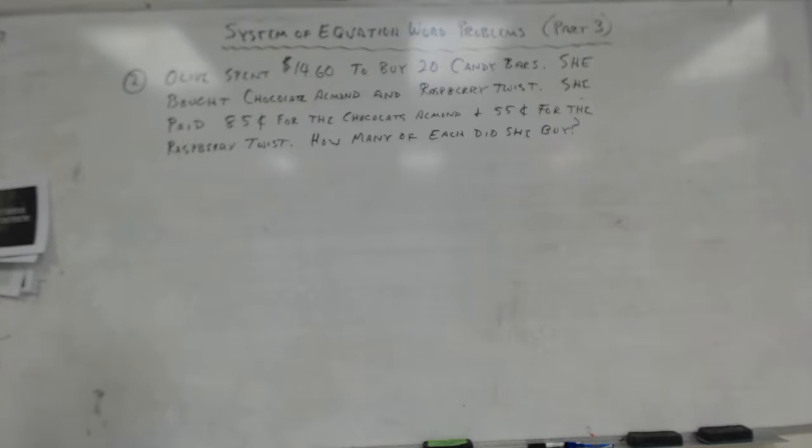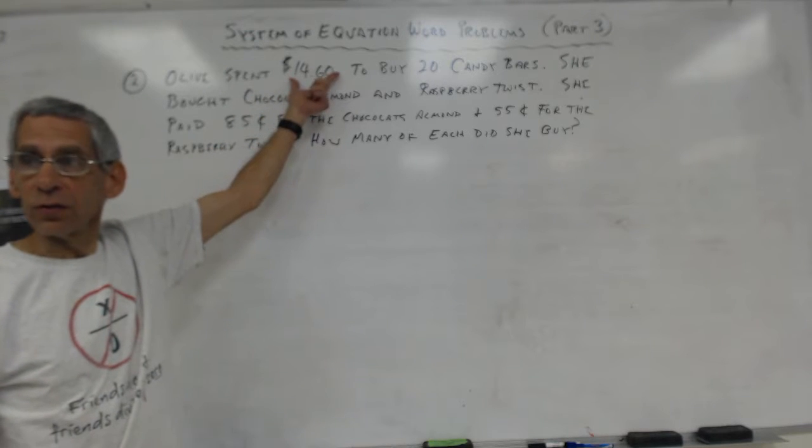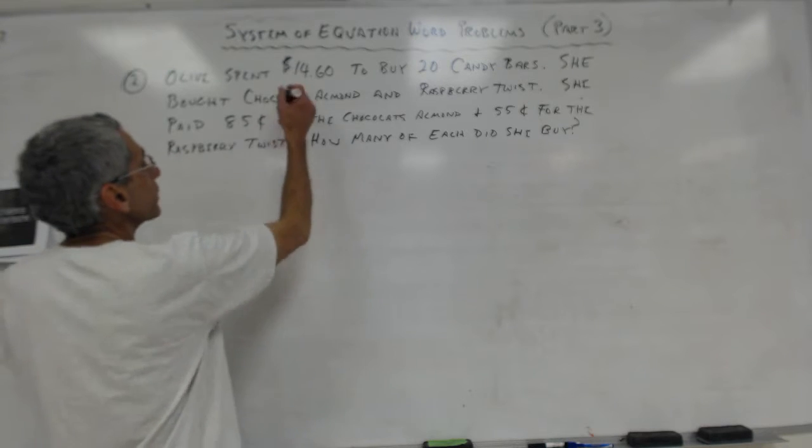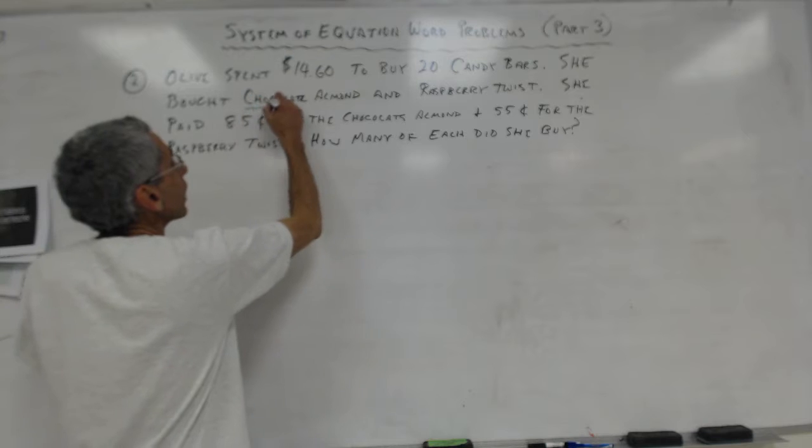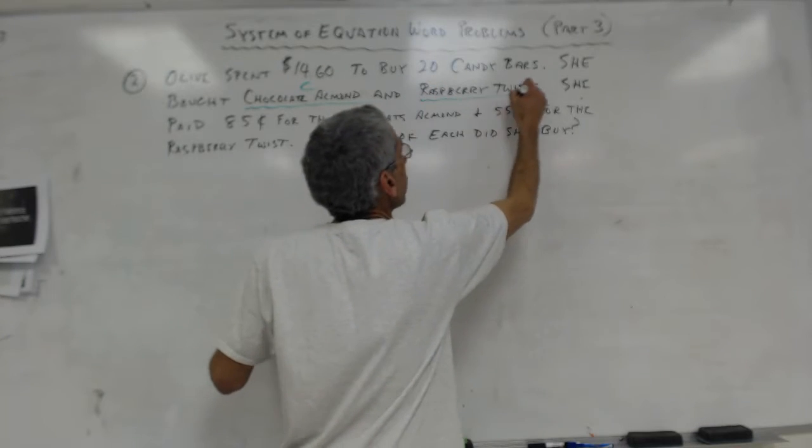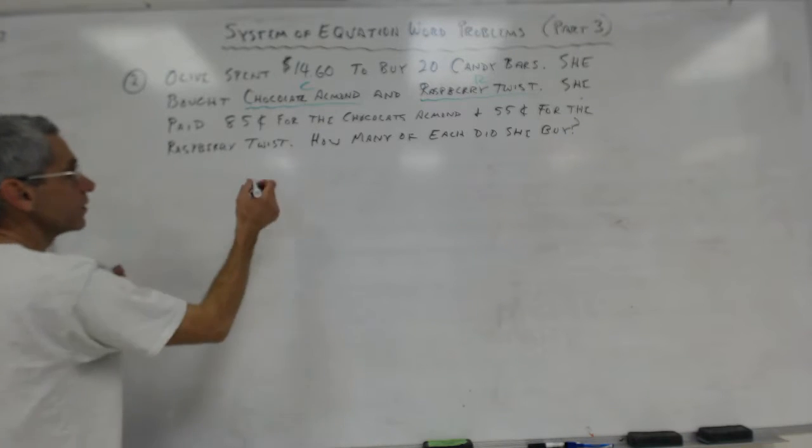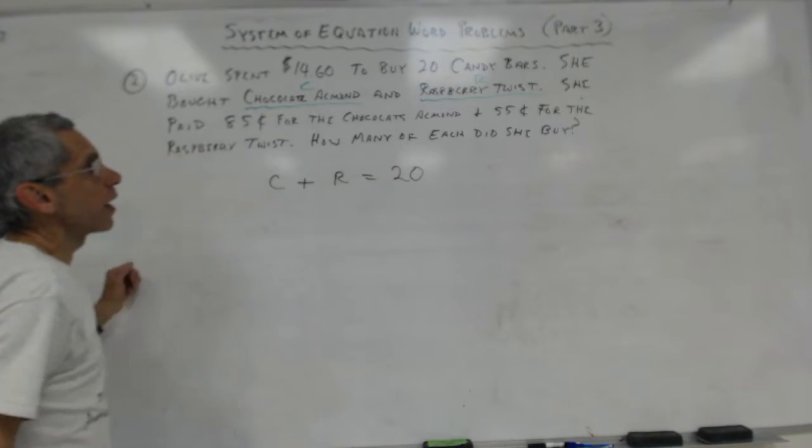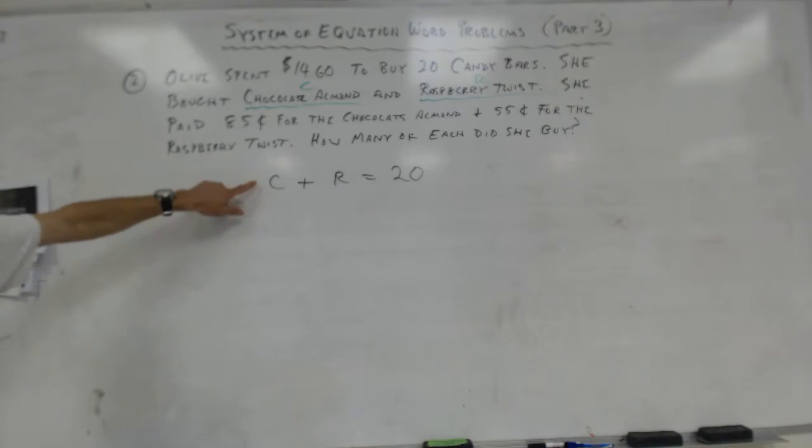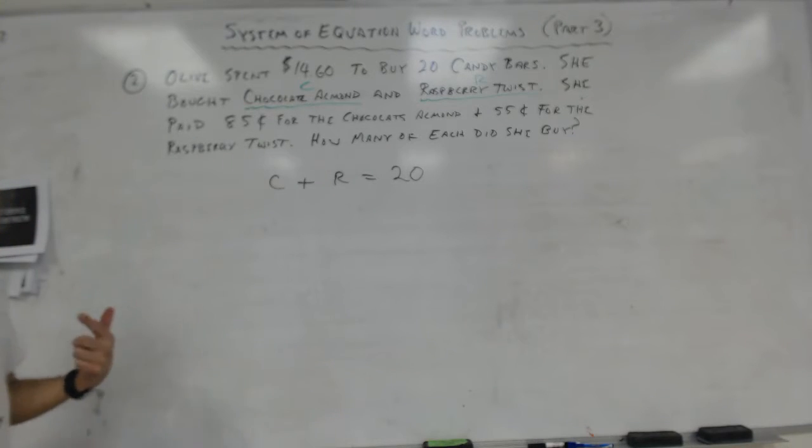So system of equations. We've got chocolate almond is C and raspberry will make it R. So we've got C plus R is equal to 20. That's our quantity of candy bars bought. Number of chocolate bars plus the number of raspberry twists equals 20. Now we have to do our value.